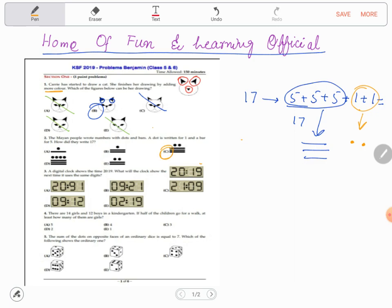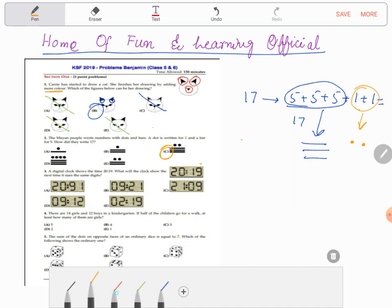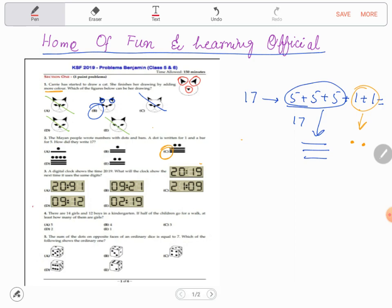This is a much greater question, it is a good question. A digital clock shows the time 20:19. What will the clock show the next time it uses the same digits?